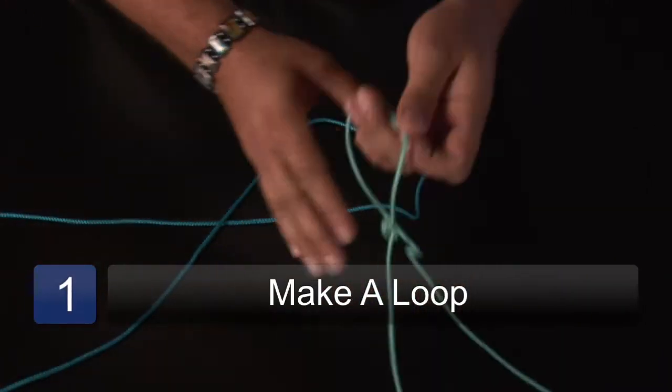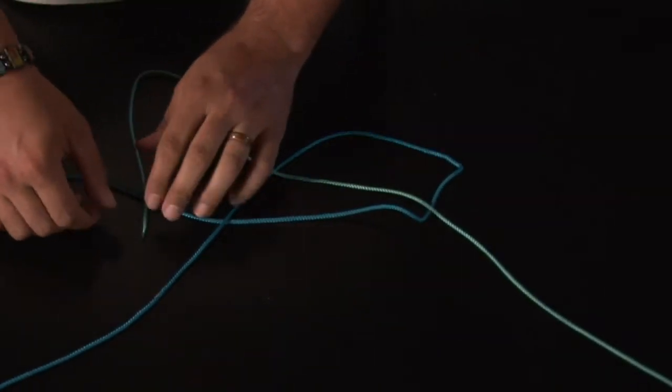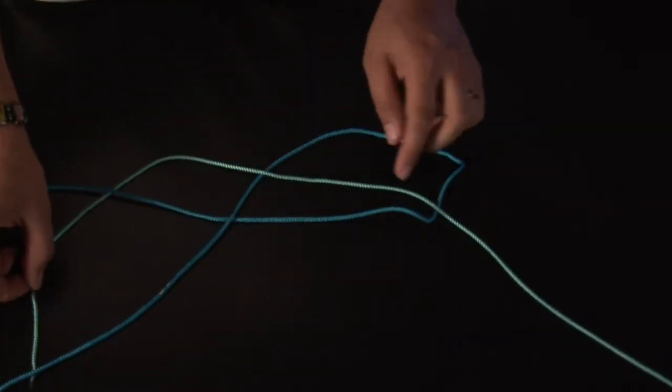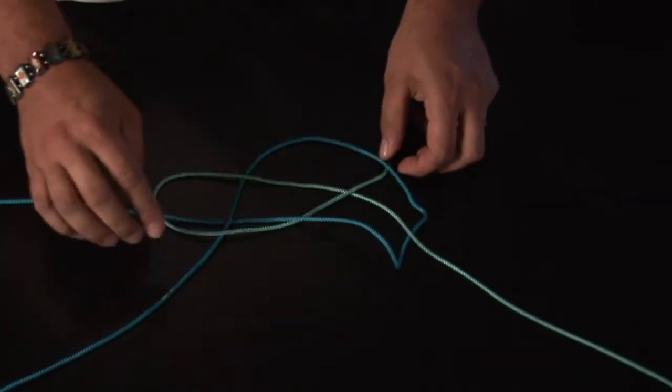What we're going to do is we're going to take our other line. We're going to bring it over the top of this loop and then bring it under. We're just going to go over this one and then just weave it back through like so.